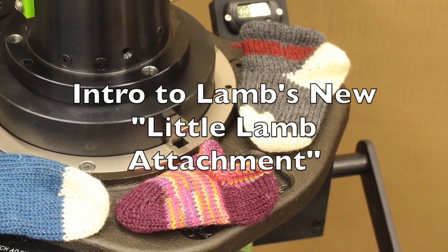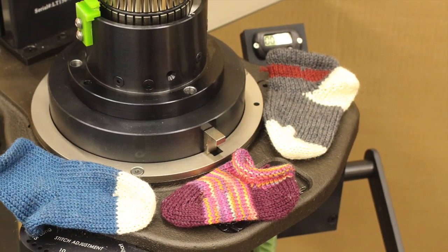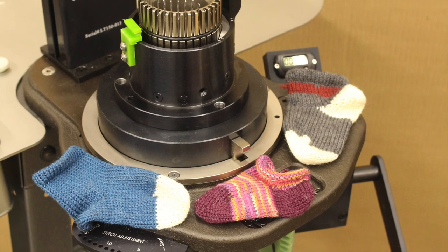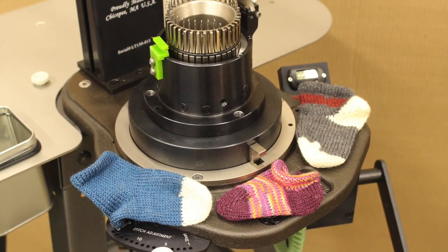Lamb's new Little Lamb attachment gives customers the ability to crank small socks and other knit goods left to the cranker's imagination.